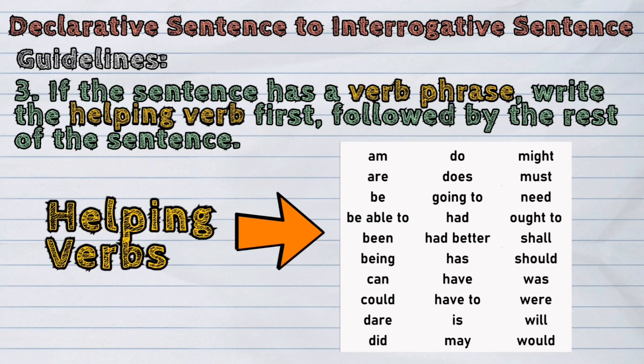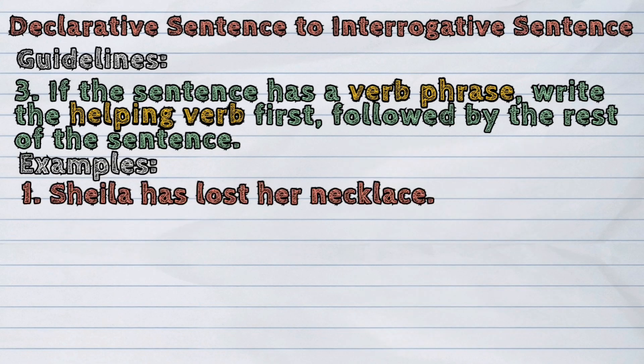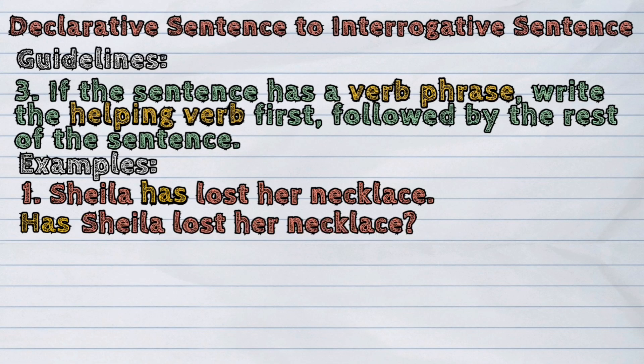Let us study the following examples. Number one: Sheila has lost her necklace. The helping verb in the sentence is 'has,' so we will write it first in the sentence, then copy the rest. It will now become: Has Sheila lost her necklace?